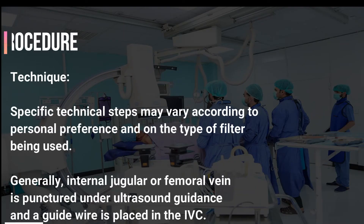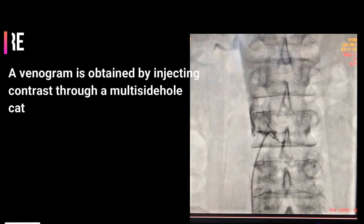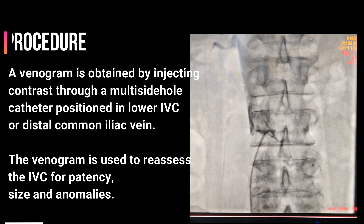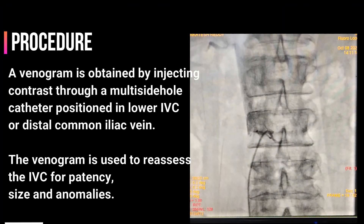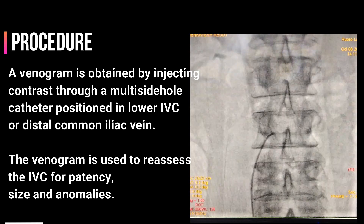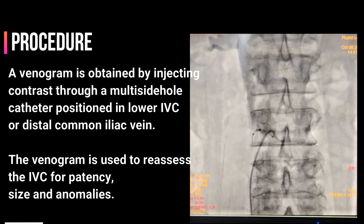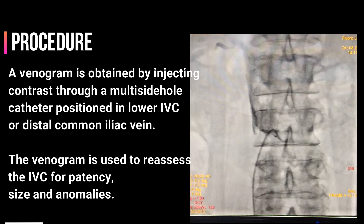Technique. Specific technical steps may vary according to personal preference and on the type of filter being used. Generally, the internal jugular or femoral vein is punctured under ultrasound guidance, and a guide wire is placed in the IVC. A venogram is obtained by injecting contrast through a multi-sidehole catheter, positioned in the lower IVC or distal common iliac vein.